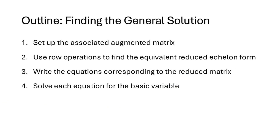Here's the step-by-step process for finding the general solution of a system of equations. First, we set up the associated augmented matrix. Second, we use row operations to find the equivalent reduced echelon form. Third, we write the equations corresponding to that reduced matrix. And then we solve each equation for the basic variable. Remember that each basic variable will only appear once, and each equation will only have one basic variable in it, so we solve that equation for that variable to generate the general solution.